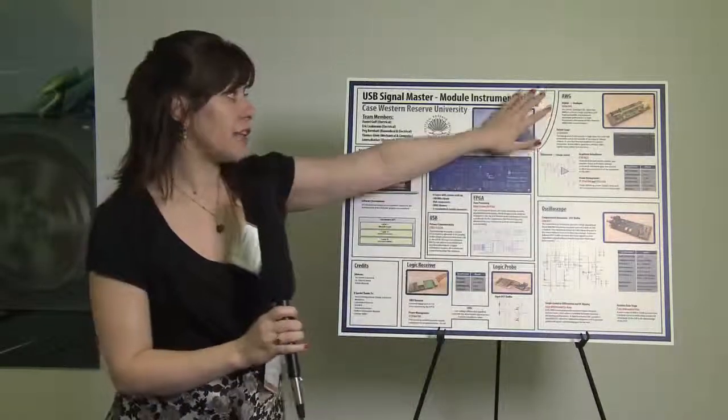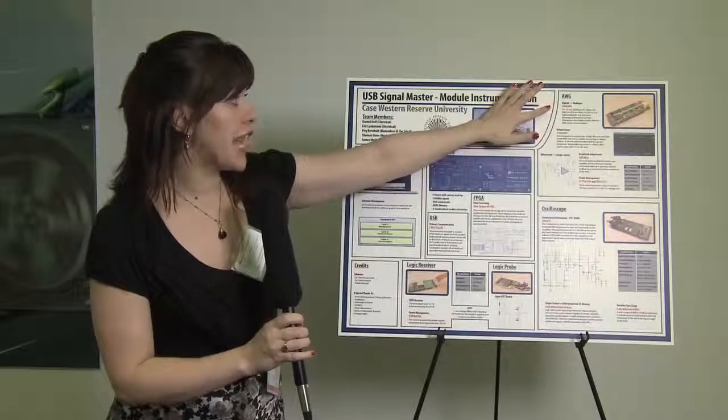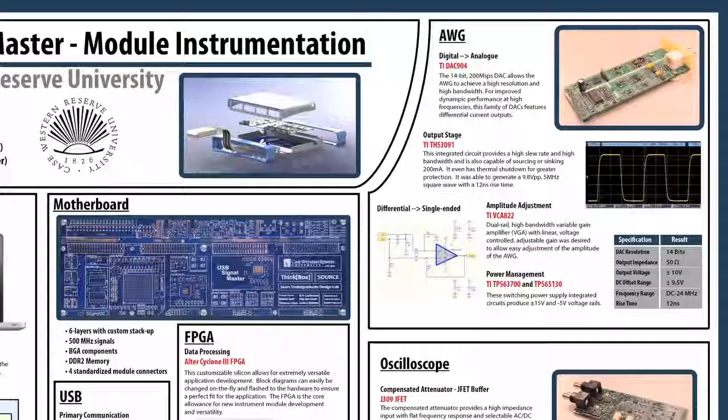We found the digital to analog converter is the DAC 904. And this family of parts is 200 mega samples.